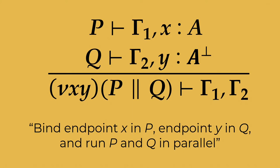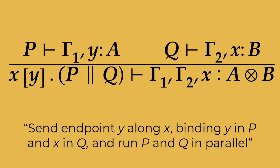So here is the CP interpretation of the classical linear logic cut rule. The process can be read as bind endpoint X in process P, endpoint Y in process Q, and run P and Q in parallel. So in order to get deadlock freedom, this glues together two pi-calculus constructs: name restriction and parallel composition. The CP interpretation of the classical linear logic tensor rule is also a good example of this. So we can read this process as send endpoint Y along X, binding Y in P and X in Q, and then run P and Q in parallel. So ideally, we'd want to separate output and parallel composition constructs.